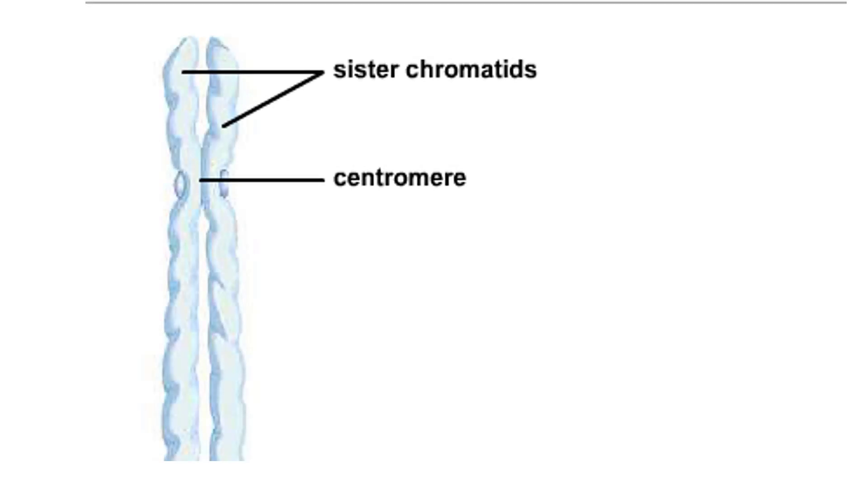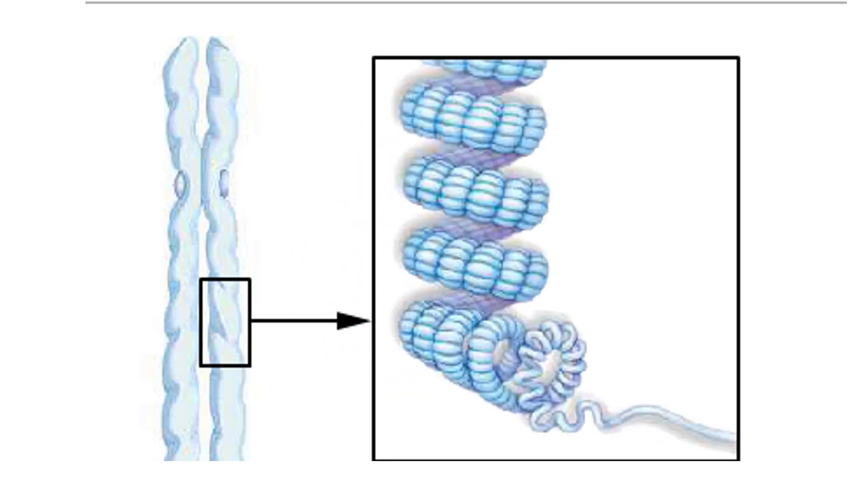In metaphase, the chromosomes are duplicated and are at their most condensed. In each chromosome, two identical sister chromatids are held together at a constricted region called the centromere.